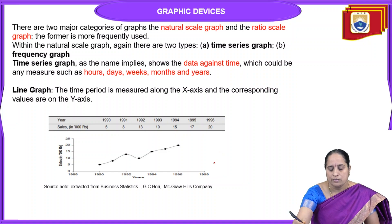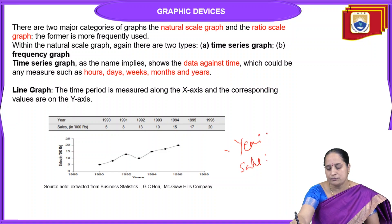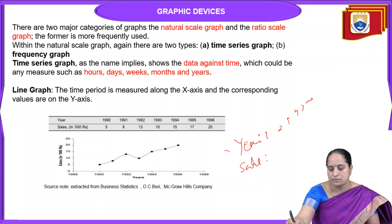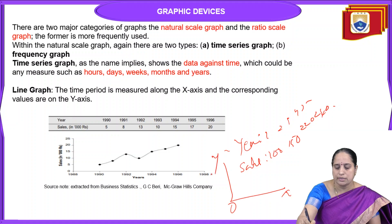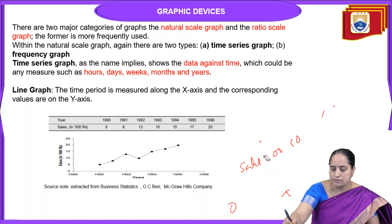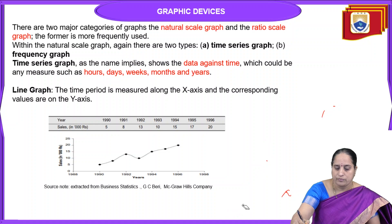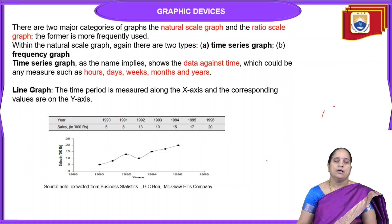For example, if you have yearly sales data over a period of five years, that data is specified for the last five years along with how many sales were made — 220, 240 and so on. Using this data, we construct a graph. Time period is considered as one of the major variables in a time series graph. In a line graph, the time period is measured along the x-axis and the corresponding values are on the y-axis.